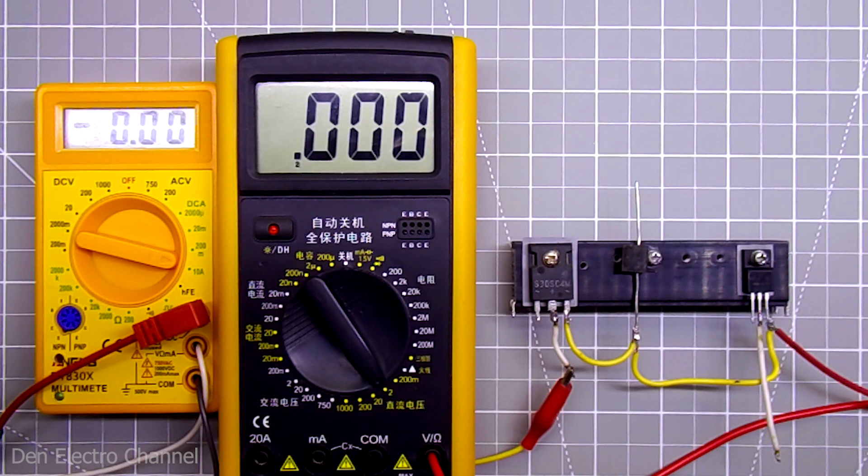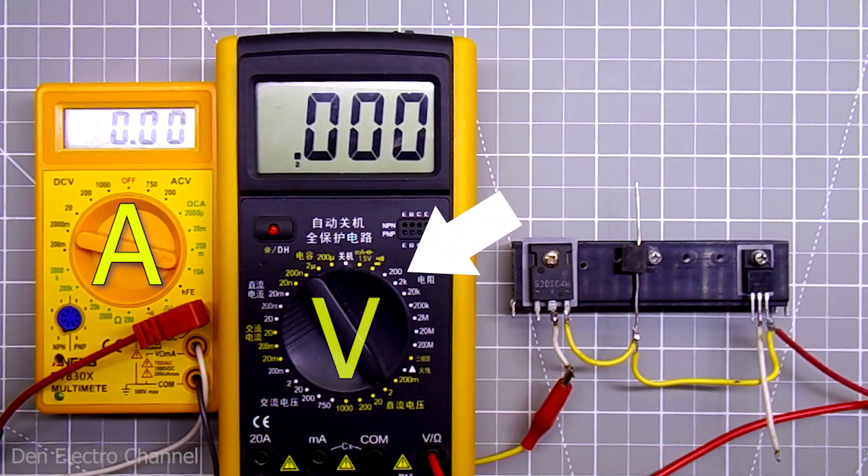Behind the scenes, I connected the load. The current will be supplied to it through the diode. This multimeter will show the current through the load, and this one will show the voltage drop across the diode. Don't pay attention to these diodes for now, we'll get to them later.